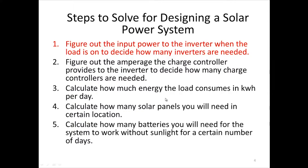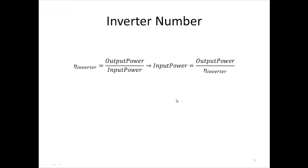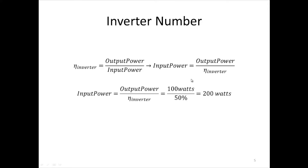Step one: we need to figure out the input power to the inverter when the load is on, to decide how many inverters are needed. The general efficiency equation is efficiency equals output power over input power. Since we know the output power of the inverter is 100 watts and the efficiency is 50%, we solve for input power: input power equals output power divided by efficiency, which gives us 200 watts.